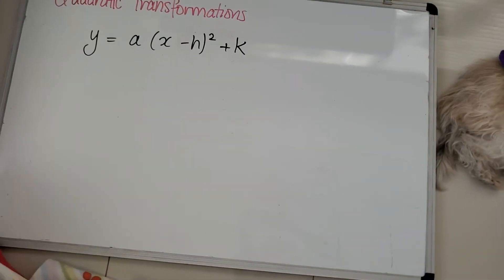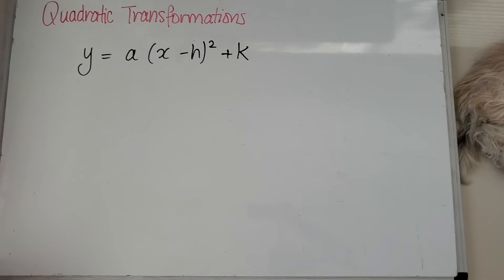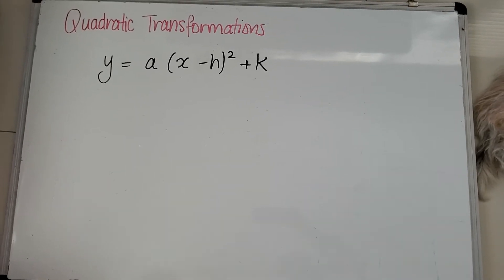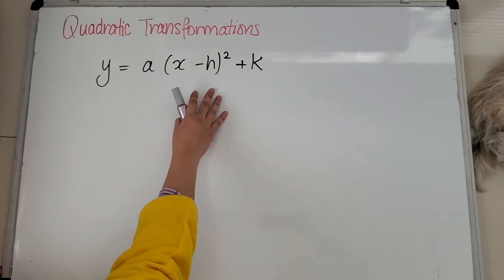Okay, we're ready? Albie? Yeah. Okay, so we're doing quadratic transformations today. This is already in the turning point form.